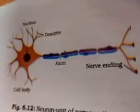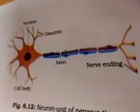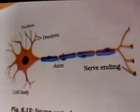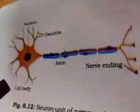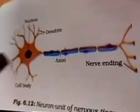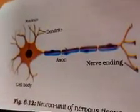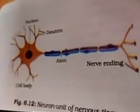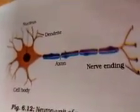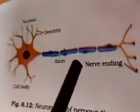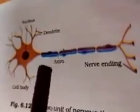A neuron consists of a cell body. As you can see in the picture, this is the figure of a neuron. A neuron consists of a cell body with a nucleus and cytoplasm. You can see here, this is the cell body and cytoplasm is present in it, from which long, thin, hair-like parts arise. Usually, each neuron has a single long part. This long part is known as the axon, and many short branched parts called dendrites.